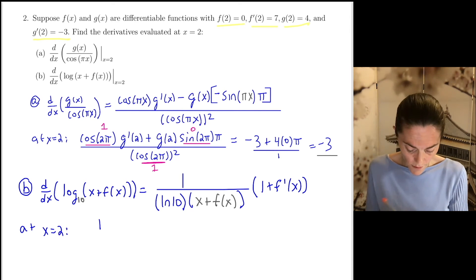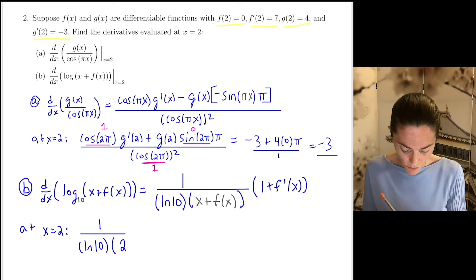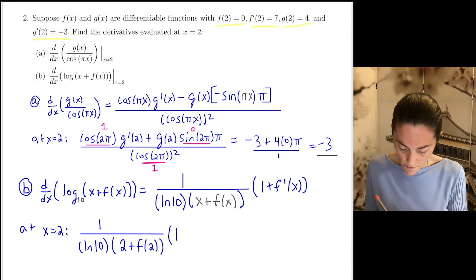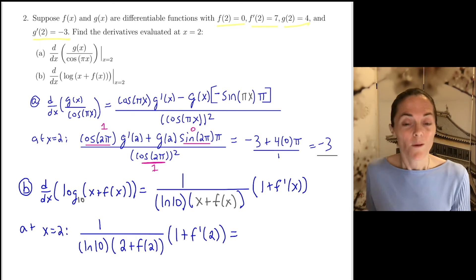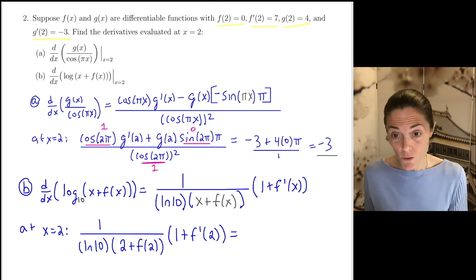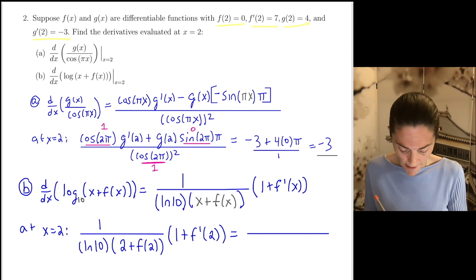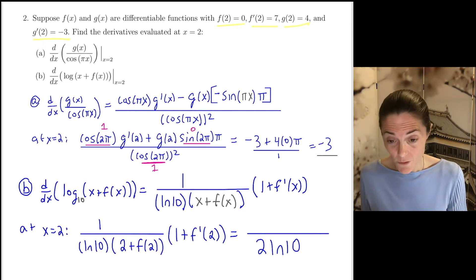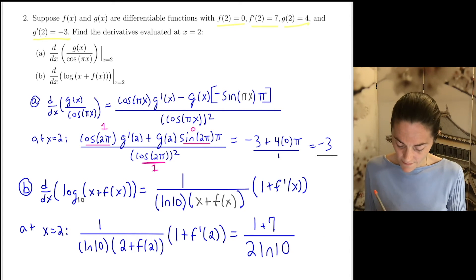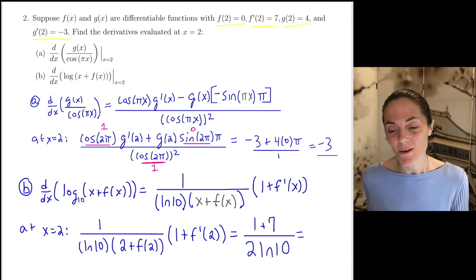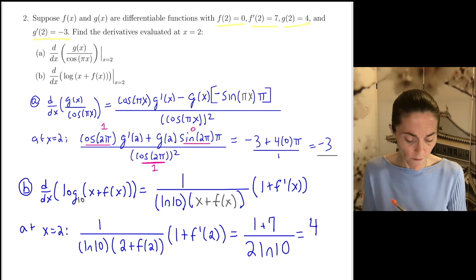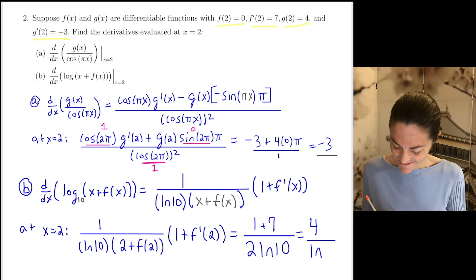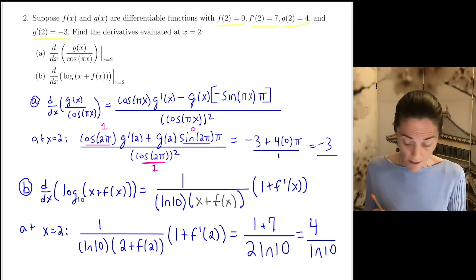We look above: f of 2 is just 0, so in my denominator I have 2 ln 10. And in my numerator, f prime of 2 is 7, so this is 1 plus 7. My numerator is 8 and I have a 2 in the denominator, so I can just make this 4 divided by natural log of 10. And this is my final answer in letter 2B.